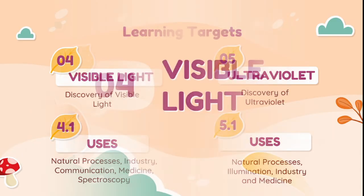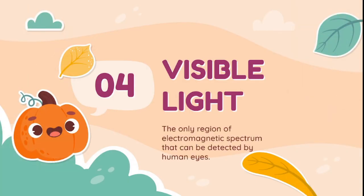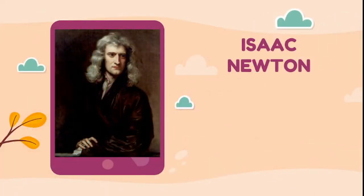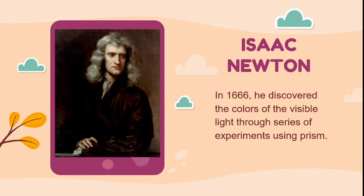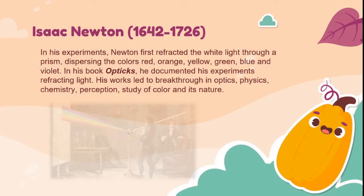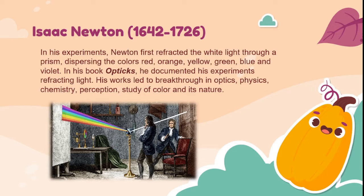Let's start with visible light, the only region of the electromagnetic spectrum that can be detected by human eyes. Isaac Newton discovered the colors of visible light through a series of experiments using a prism in 1666. In his experiments, Newton first refracted white light through a prism, dispersing the colors red, orange, yellow, green, blue,